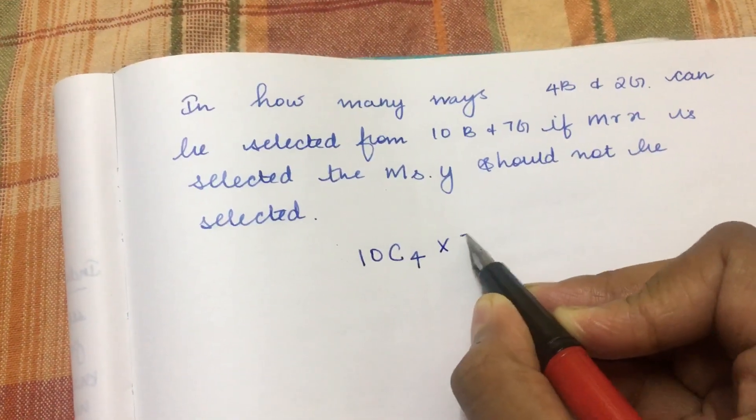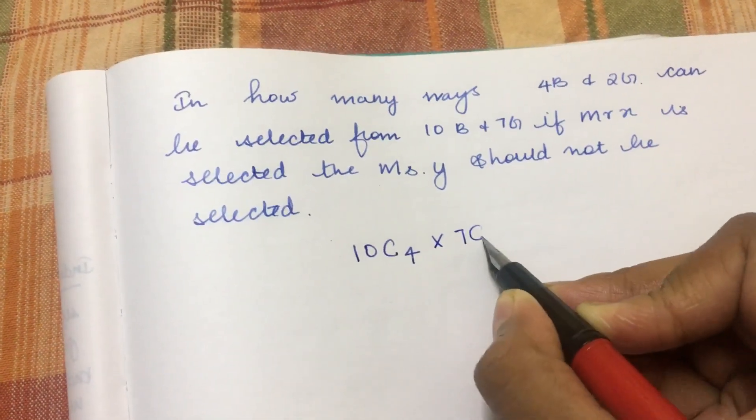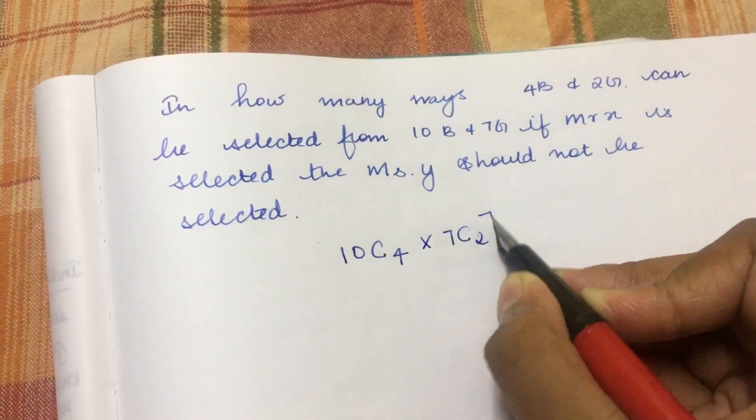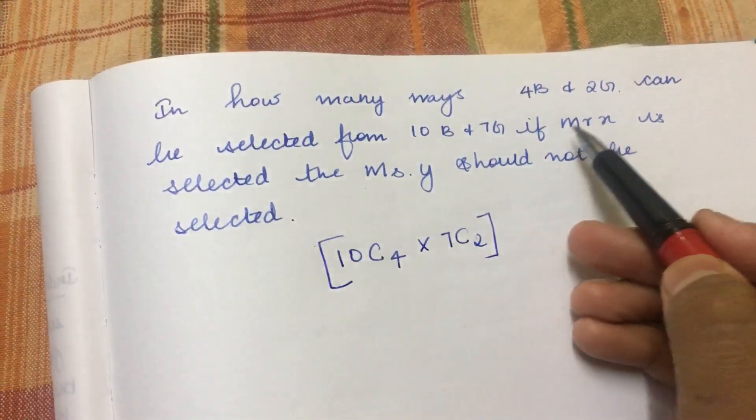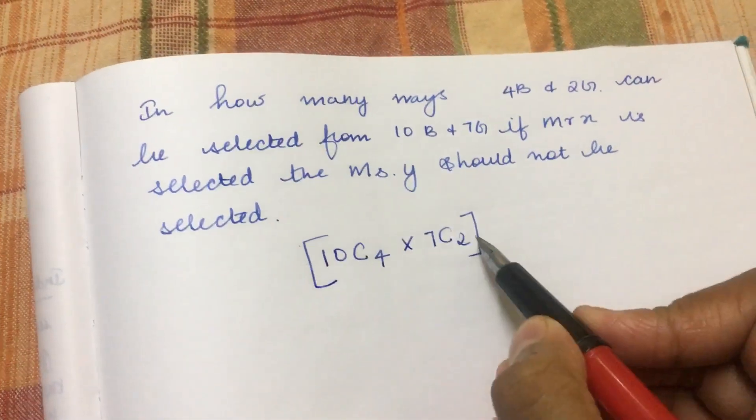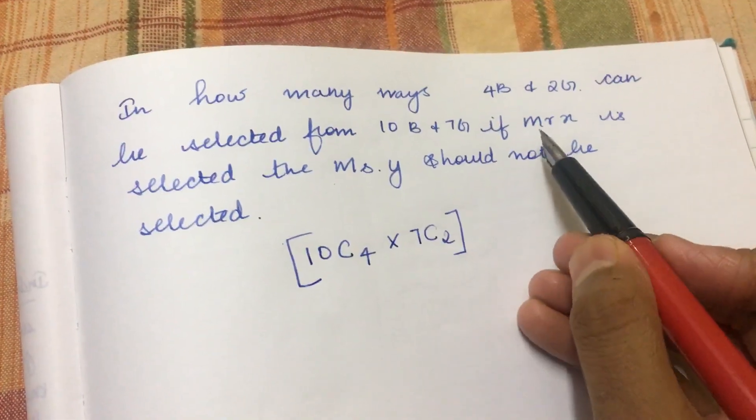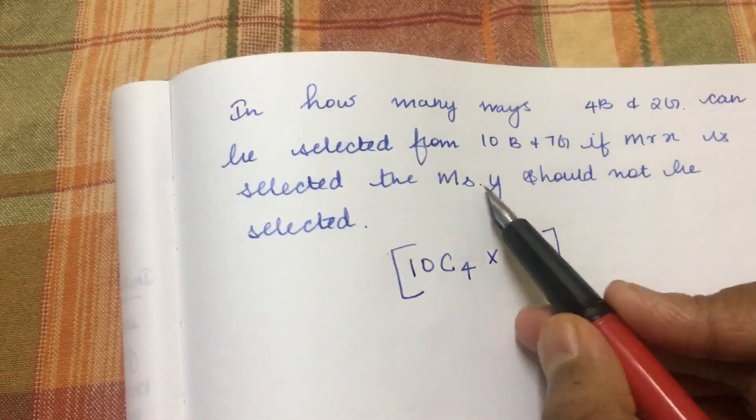This is the normal condition without the restriction. The normal case would be 10C4 times 7C2. But there's a condition that these two people cannot come together.